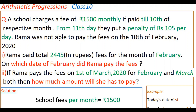Rama was not able to pay the fees on 10th February, so she paid on some other day after the 10th of February. The first question is: Rama paid a total of 2445 rupees fees for the month of February. On which date of February did Rama pay the fees?